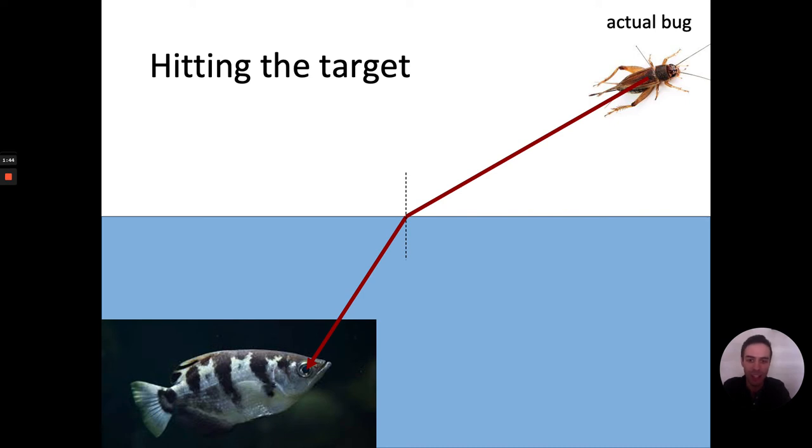But the fish doesn't know that the light refracts, just like we don't know. Our brains don't know when we process the image. We think, and the fish thinks, light travels in straight lines, the bug must be over here. But it's not. The light that comes from the bug to the fish actually is coming from the actual bug, not the image of the bug, not where the fish thinks the bug is.